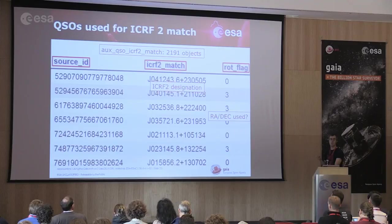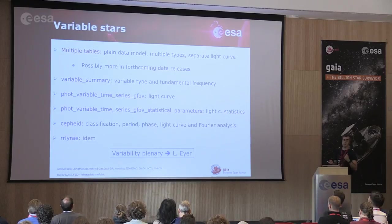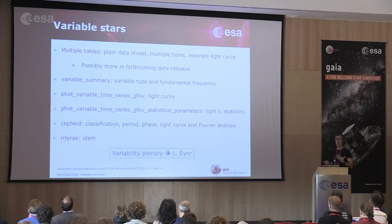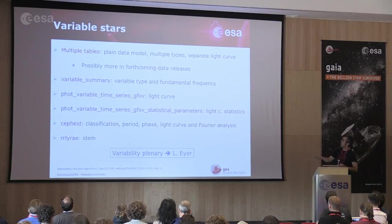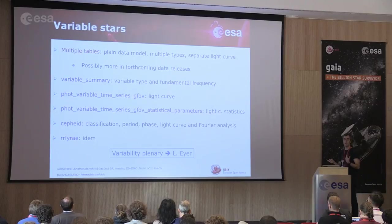We also include the quasars used for the rotation frame with the ICRF designation, and some flags telling you if that quasar was used for right ascension, declination, or both. For variable stars there will be a plenary, and we'll learn a lot — but the first thing that strikes you when analyzing variable stars is that the data is spread across multiple tables. Right now we have five different tables for variables in Gaia Data Release 1, and we may have even more for coming data releases.